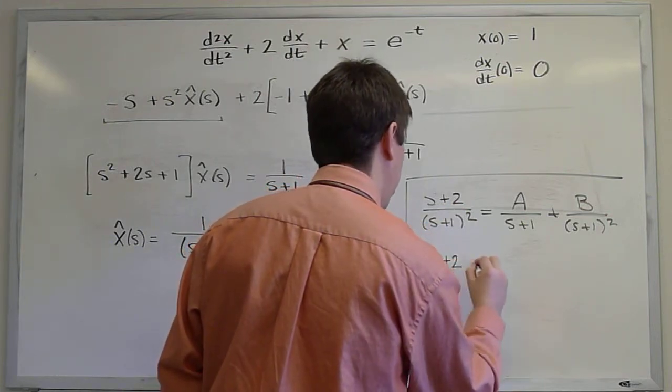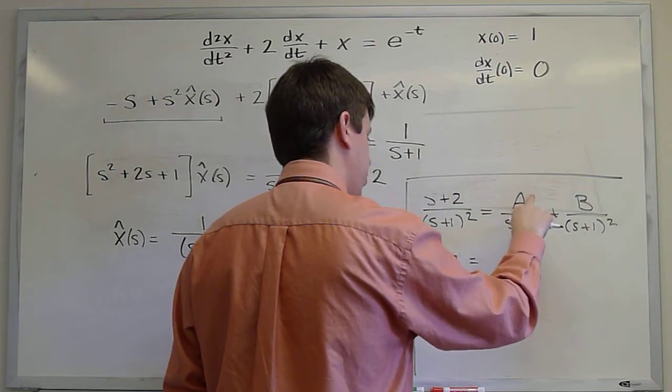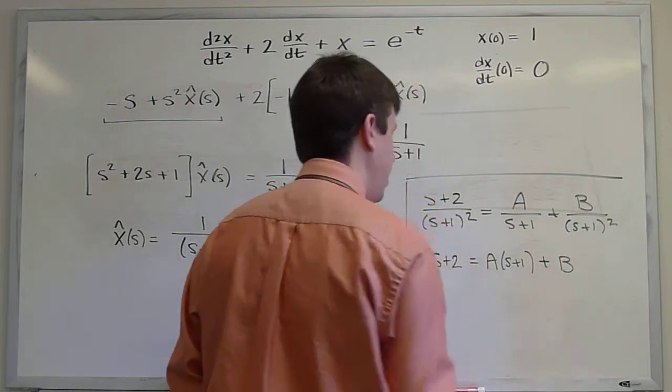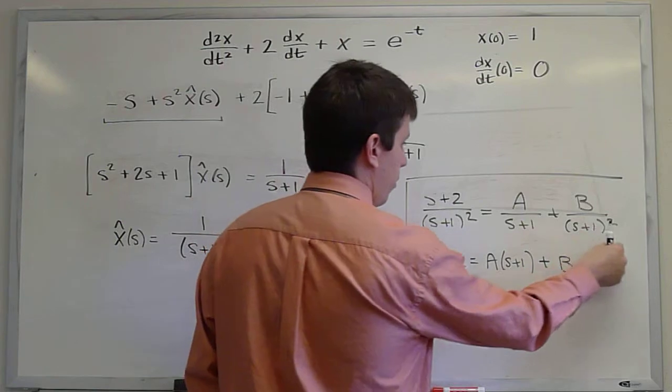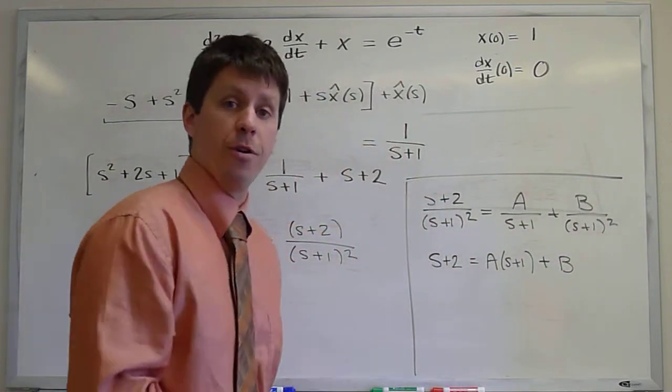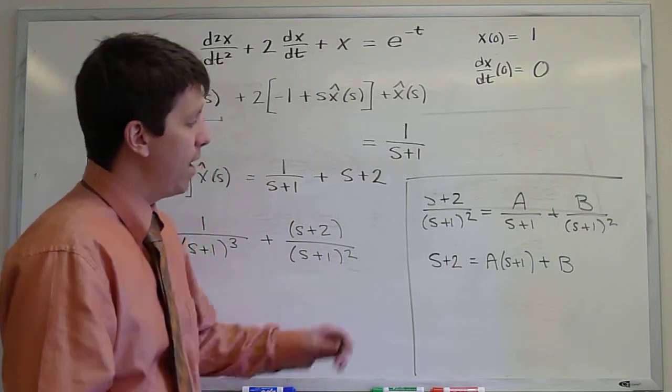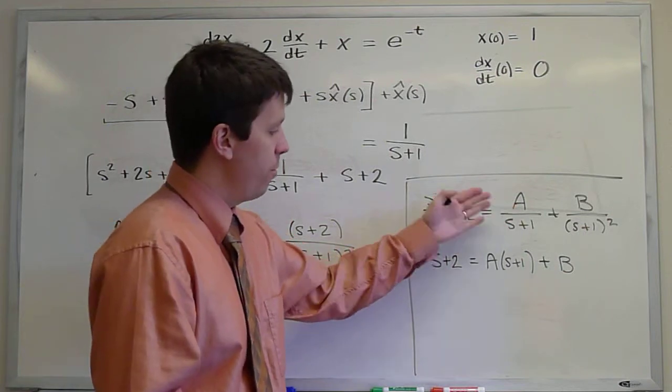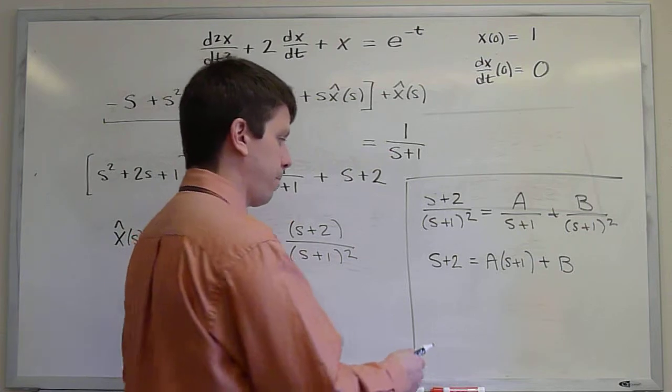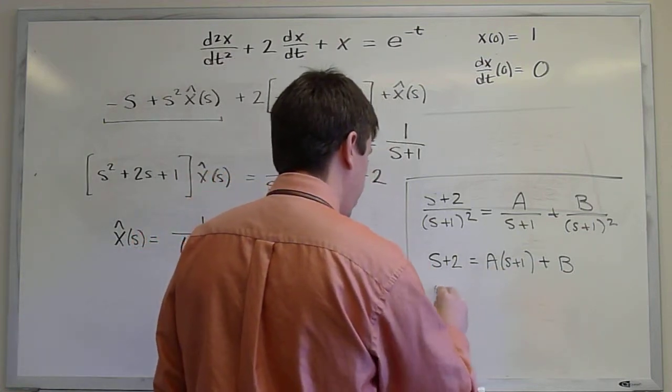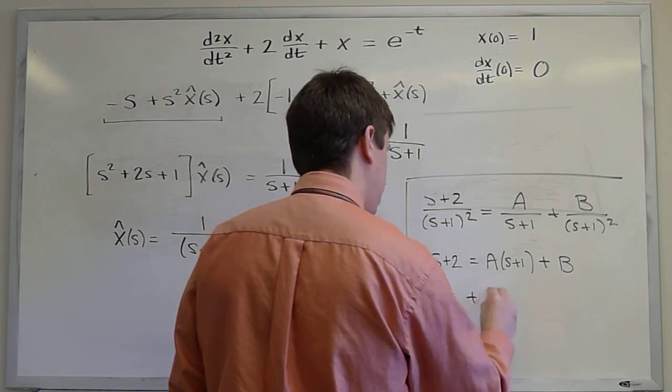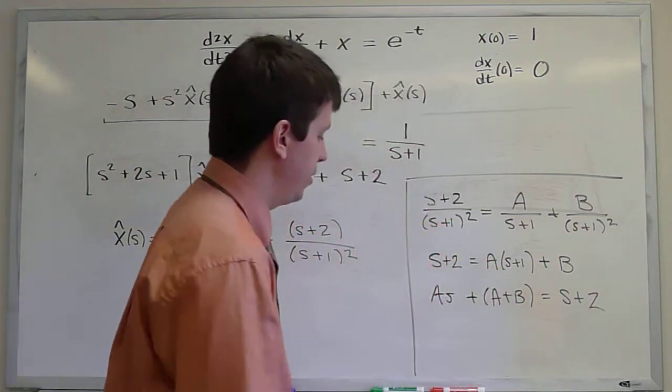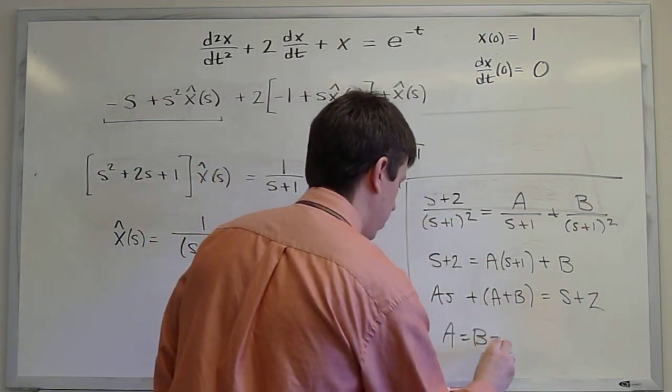And then I would multiply everything through by s plus 1 squared in order to set things equal to each other. I have s plus 2. When I multiply this by s plus 1 squared, I'll get a s plus 1. And when I multiply this by s plus 1 squared, I'll just get b. It's important to remember that this form here comes from the partial fractions theorem. It's something that has been proved, and we don't know what these constants are, but the theorem says it will have this form. After taking this result from the theorem, we then go through and we equate coefficients to figure out what a and b are. That's easily done here. We have a s plus a plus b must equal s plus 2. And that has the simple solution a equals b equals 1.